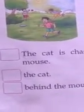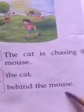Now see the fourth one. There is a cat and a mouse — what are they doing? The cat is chasing a mouse. See the options: first, 'The cat is chasing the mouse' — first letter is in capital and there is a full stop. Second, 'the cat' — this is not in capital and these two words don't make any sense. Third, 'behind the mouse' — this line is also not making any sense and the first letter is also not in capital. So the answer is the first one.